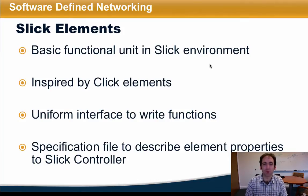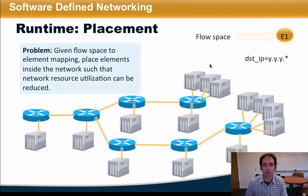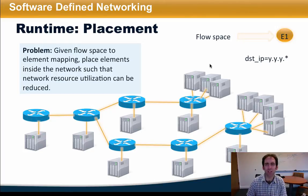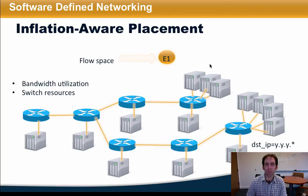SLIC elements are the basic functional unit in the SLIC environment and are inspired by the Click programming model. They expose a uniform interface for writing functions. A specification file allows an element to describe its properties to the SLIC controller. The SLIC runtime determines how to place these functional elements in the network given a specified mapping between flow space and sequences of elements. The goal of this placement is to satisfy specifications about the sequences of elements and functions while achieving desired operational objectives, such as minimizing network congestion. One way to perform this placement is to place elements that increase traffic volume, such as decompression, closer to the traffic destination, and place those that decrease traffic volume, such as firewalling, closer to the source.